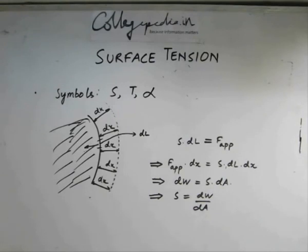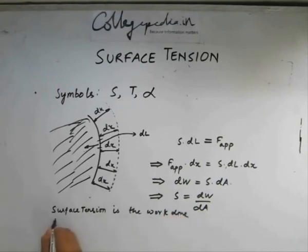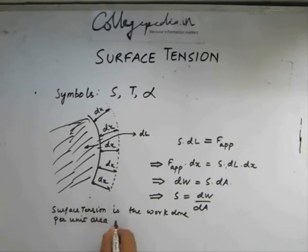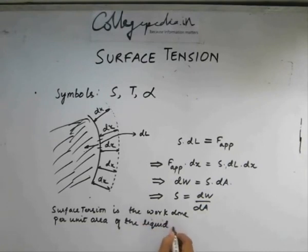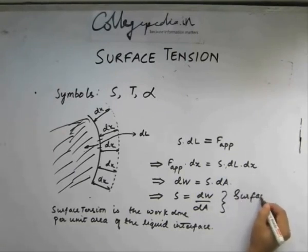So another definition for surface tension is surface tension is the work done per unit area of the liquid interface. This can also be stated as surface energy density.